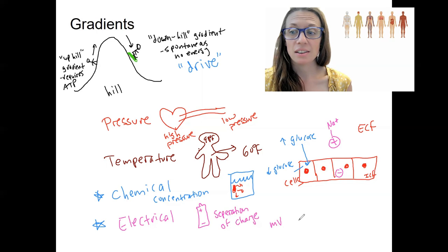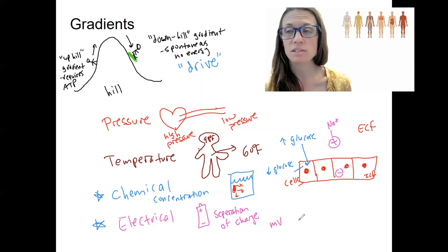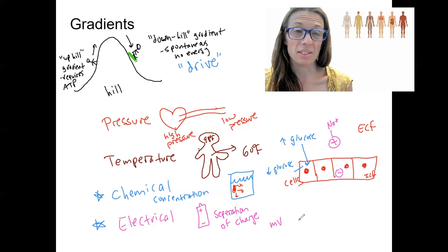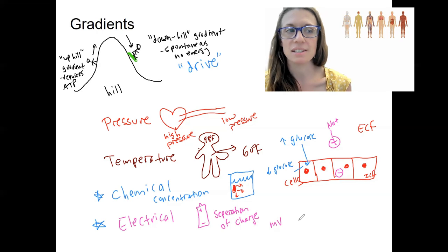Now, maintaining, establishing in the first place, reestablishing these gradients takes work. We'll talk a lot about this, especially that electrical gradient across the cell. And you'll see why they're important, the use of those gradients once they're maintained.